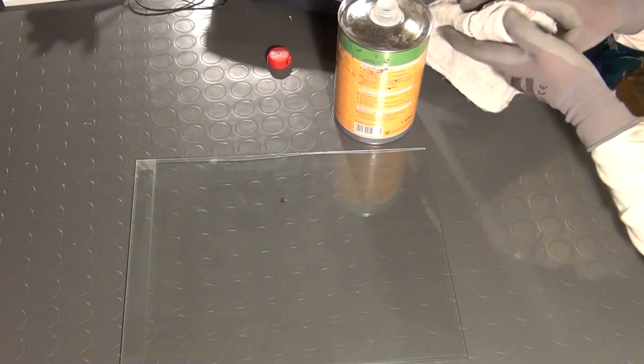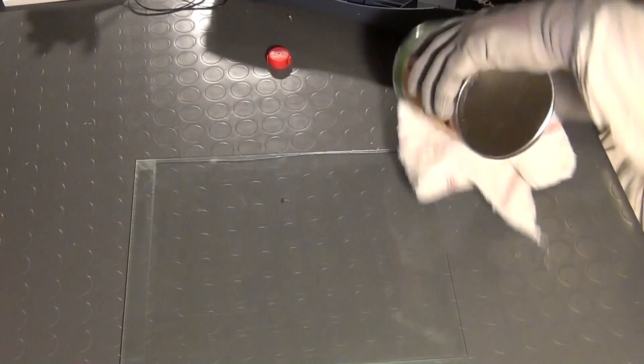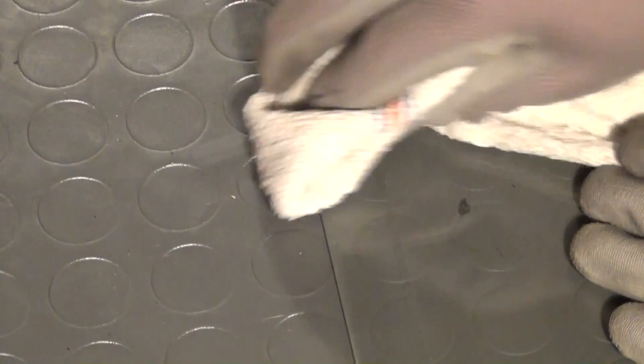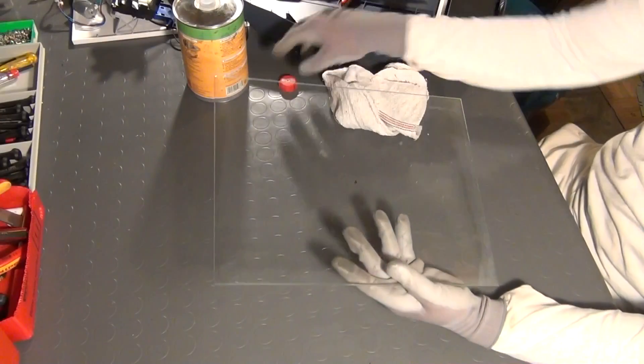The residual glue can be wiped off with a piece of cloth and some universal thinner. This glass panel can be reused in the process of PCB etching, as I will demonstrate in a later video.